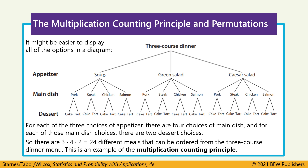Three for the appetizer, four for the main dish, two for the dessert — there are 24 different meals in total that can be ordered. This is an example of the multiplication counting principle.